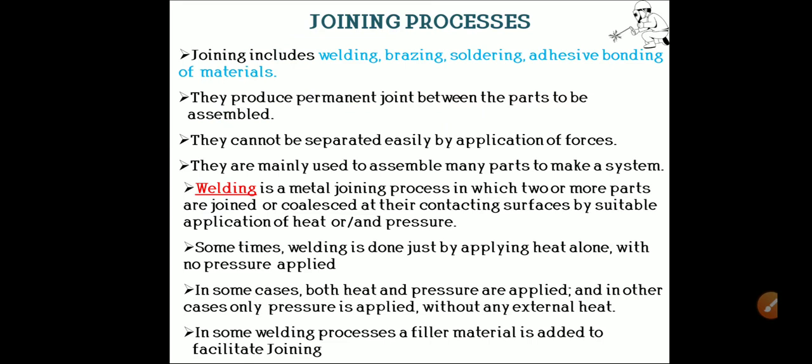Joining processes include welding, brazing, soldering, and adhesive bonding of materials. They produce permanent joints between the parts to be assembled and cannot be separated easily by application of force. They are mainly used to assemble main parts to make a system. Welding is defined as a metal joining process in which two or more parts are joined at their contacting surfaces by suitable application of heat or pressure.